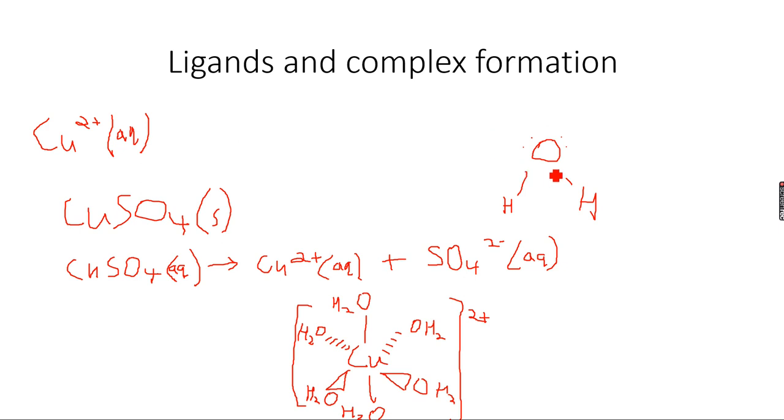So as you know a coordinate bond is a bond in which one atom provides both the electrons for the formation of a covalent bond. It is a coordinate bond is also known as a dative covalent bond and we represent this as an arrow.